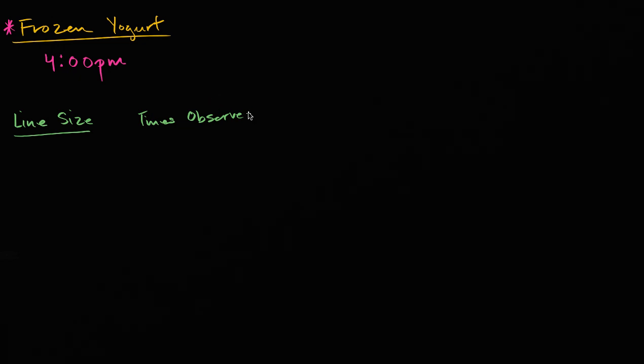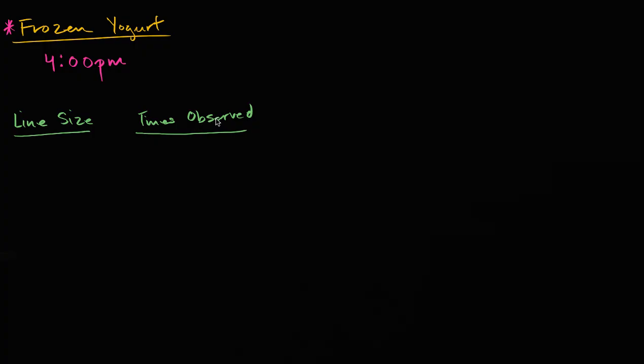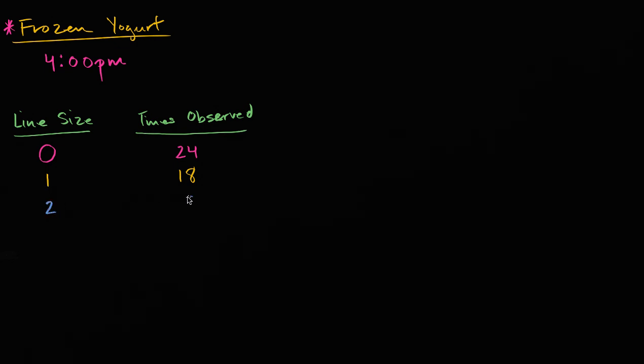Observed, times observed. My handwriting is O-B-S-E-R-V-E-D. All right, times observed. So let's first think about, you go and you say, hey look, I see no people in line exactly, or you see no people in line, exactly 24 times. You see one person in line exactly 18 times. And you see two people in line exactly eight times.